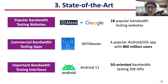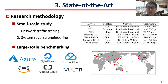To answer this question, we first study the state of the art. Our research objects include popular bandwidth testing websites, commercial bandwidth testing apps, and important bandwidth testing APIs in Android. We use three PCs and four smartphones to conduct small-scale investigations. In detail, we record and analyze the network traces of different BTSs, and if the sources are available, we conduct code-level reverse engineering.